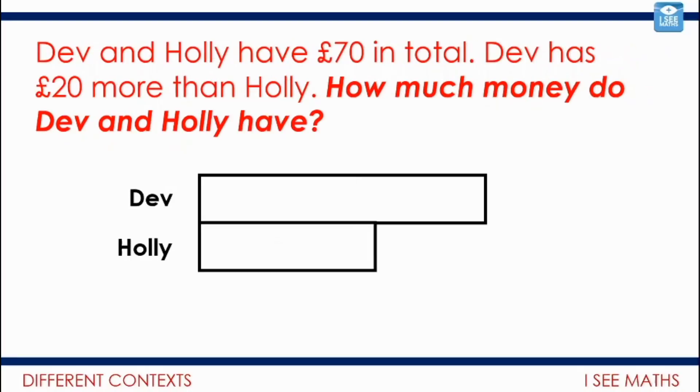Let's have a look at the next one. Dev and Holly have £70 in total. Dev has £20 more than Holly. How much did Dev and Holly have? So Dev again has got more than Holly. It's £20 more. Now have a look at this. Hmm. I wonder if you can spot the mistake. What mistake's been made?